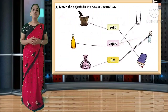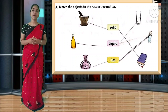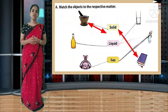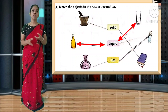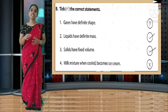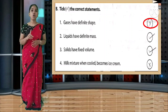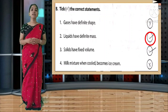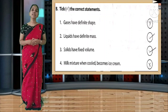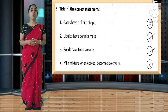From workbook lesson 10 - States of Matter. Match objects to their respective matter. Solid items: book and a paper cup. Liquid items: oil, water. Gas item: perfume. Next: tick the correct statement. First: gases have definite shape - wrong. Second: liquids have definite mass - correct. Third: solids have fixed volume - correct. Fourth: milk mixture when cooled becomes ice cream - wrong statement.